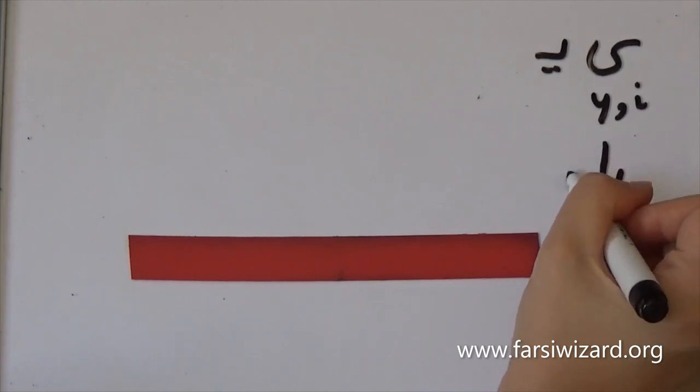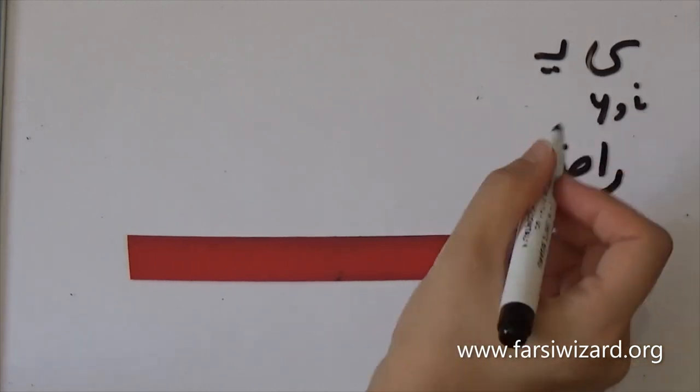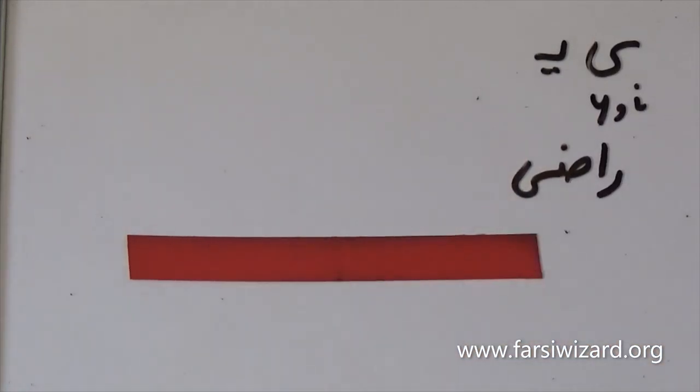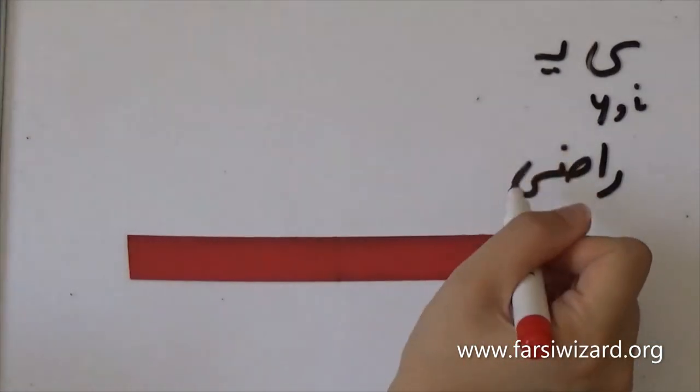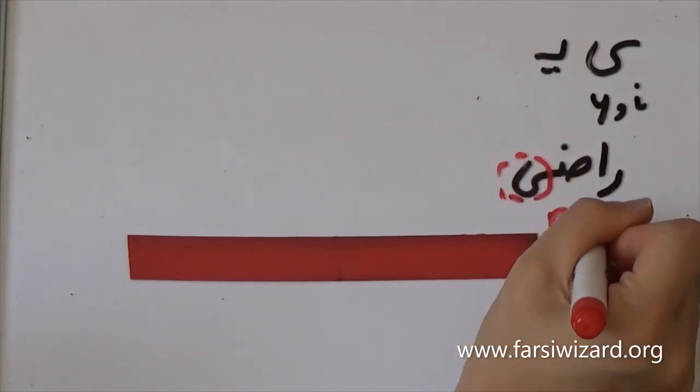So for example, here ye is at the end of the word. The word is ra z, so here the sound is e in this particular case, and basically it means satisfied or content. The letter ye is at the end of a word here.